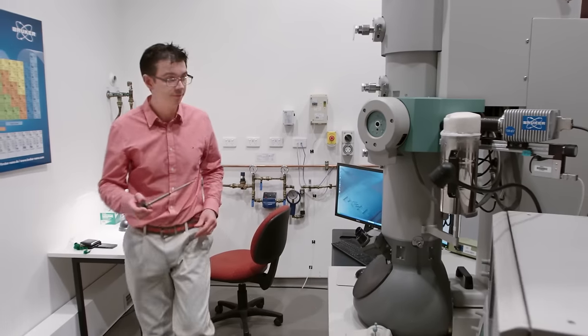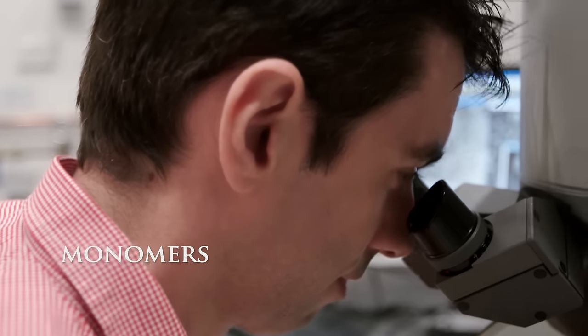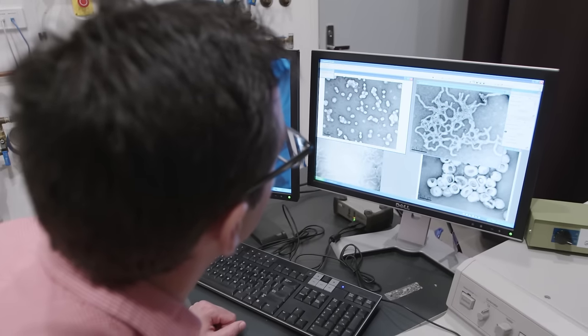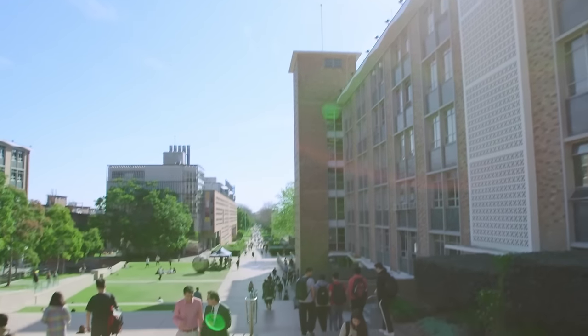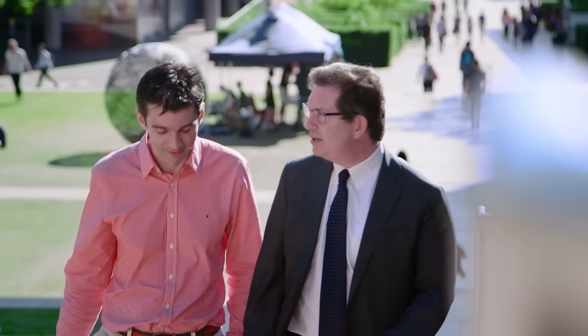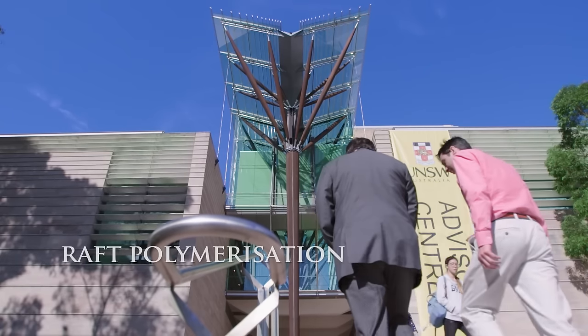You can change the property of your polymers by changing the type of monomers you're using, and this opens truly a new world. Australia is one of the leading places in the world for polymers, and I was very keen to learn in Australia how to make polymers or to use raft polymerization.